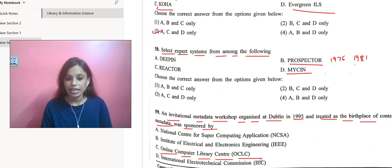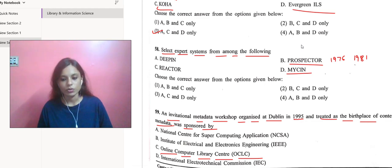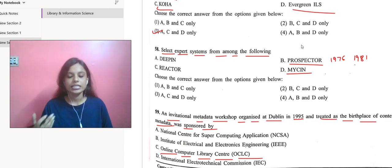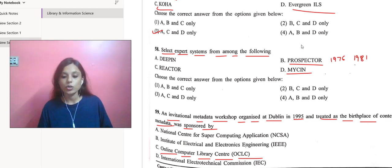The scheme originated during the 1995 invitational OCLC metadata workshop. Core refers to the metadata terms as broad and generic, being usable for describing a wide range of resources. The semantics of Dublin Core were established and maintained by an international cross-disciplinary group of professionals from librarianship, computer science, text encoding, museums, and other related fields.